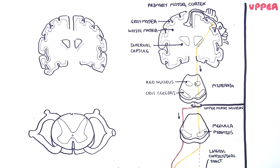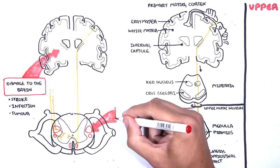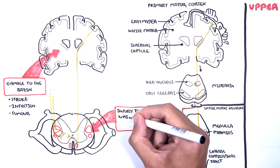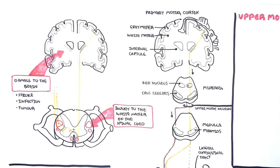Remember, the upper motor neuron transmits information from the brain to the spinal cord or the brainstem. Any injury to the brain — such as a stroke, infection, or tumors — can cause upper motor neuron lesions. Similarly, any injury to the brainstem or spinal cord, specifically the white matter of the spinal cord on the outside where the upper motor neurons are traveling through, can also cause upper motor neuron lesions.